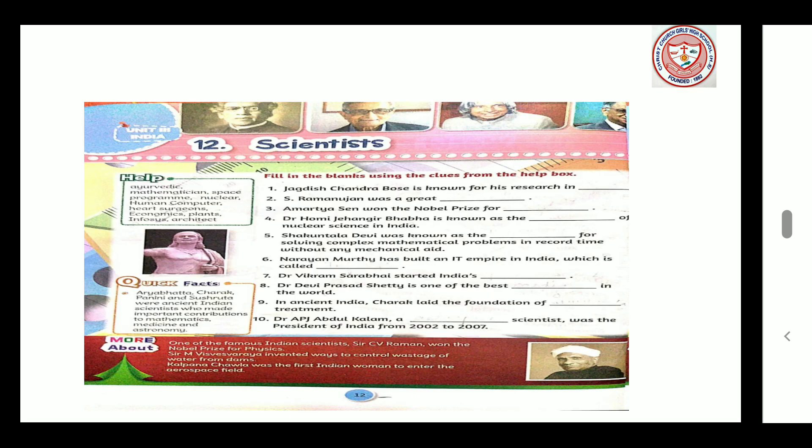Let's start with the chapter Scientists. Fill in the blanks using the clues from the help box. Number 1: Jagadish Chandra Bose is known for his research in plants.